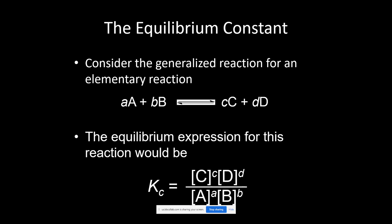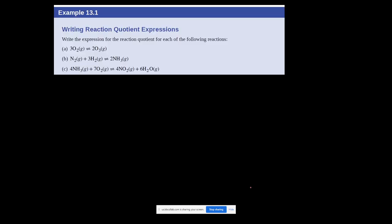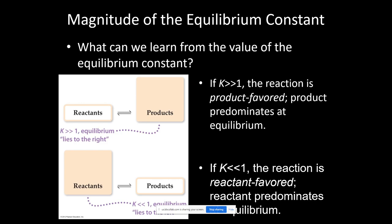Be able to write equilibrium expressions — we did practice problems on that. Also understand what K tells you about a reaction. If I give you a K value, you should tell me whether the equilibrium highly favors reactants, products, or neither. If K is much larger than 1, it highly favors products. If K is much less than 1 — remember K can't be negative, but it can be less than 1 — it highly favors reactants.